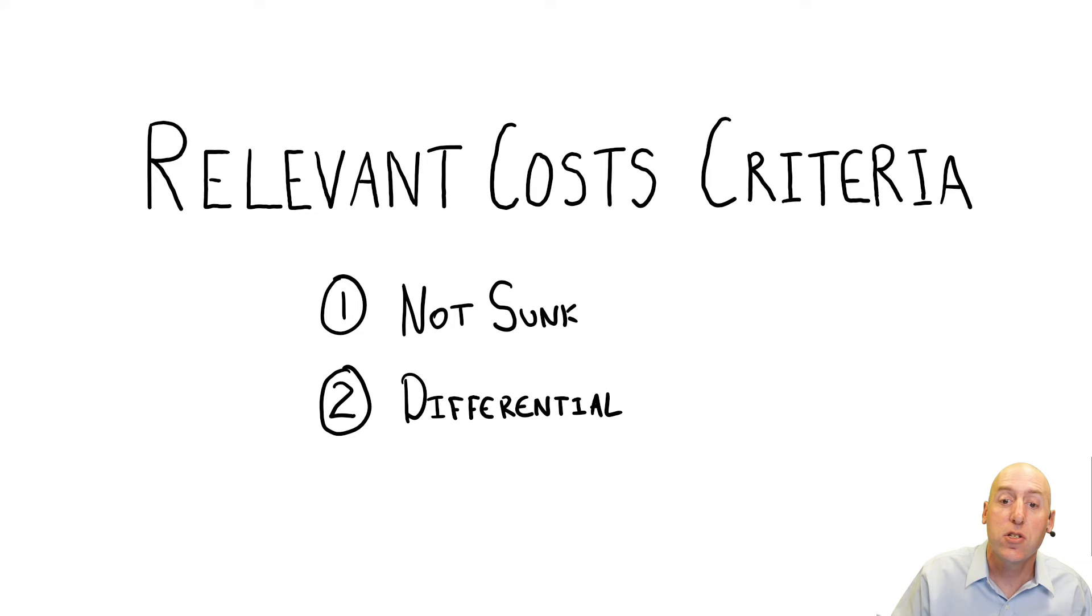So this chapter, we're going to go through all sorts of decisions - make or buy, special order, sell or process further, many types of decisions that a person can make in a business and in real life. And it all boils down to these two criteria. For a cost to be relevant, it has to be first not sunk, it can't have occurred in the past. So again, when we're sitting at stoplight number two, stoplight number one, whatever happened back there, irrelevant.